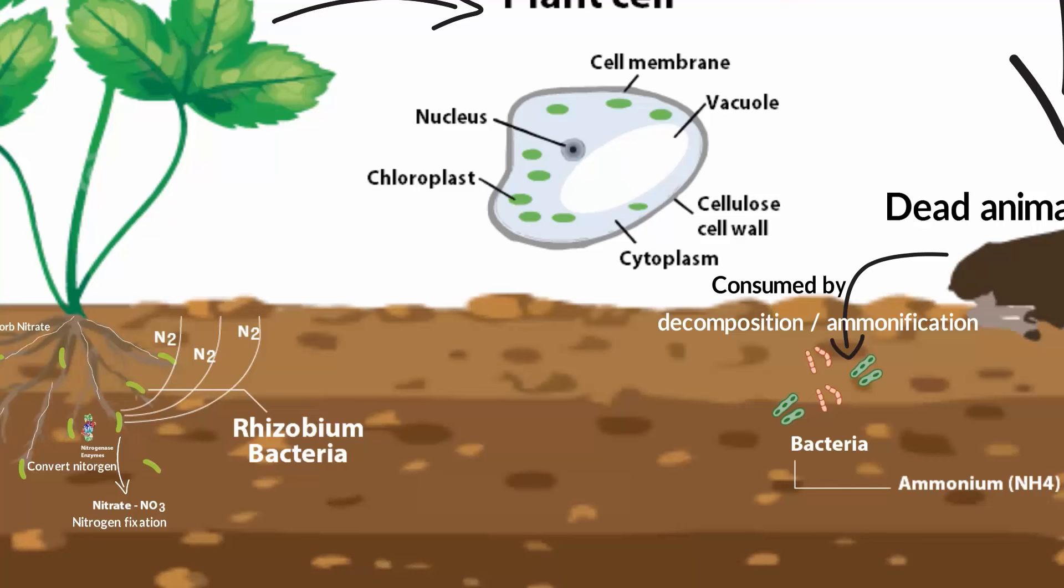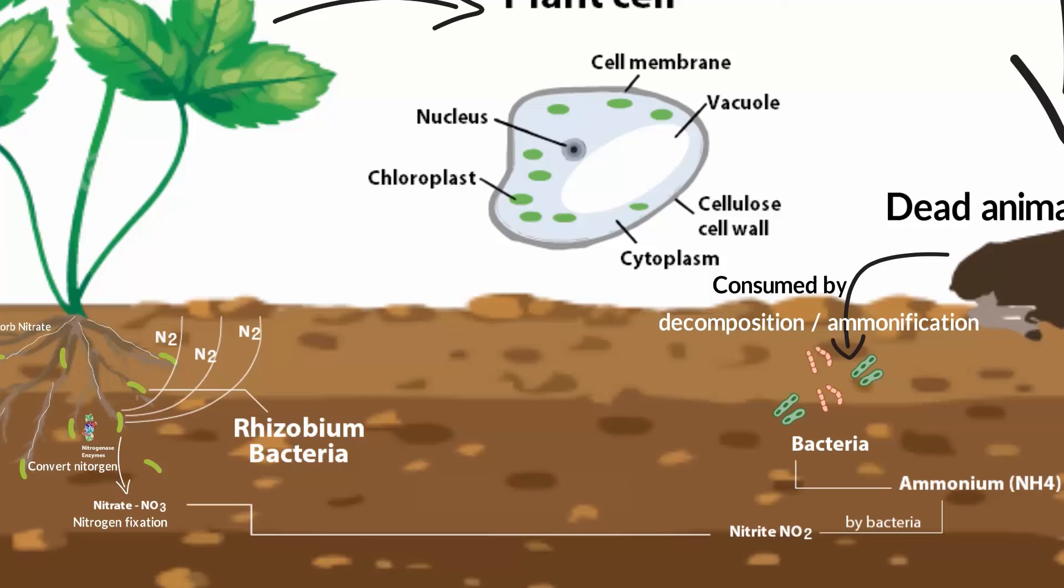Now, it is difficult for plants to use ammonium. So, this waste, ammonium, is again broken down by bacteria through a process called nitrification. Basically ammonia is first converted into nitrite and then to nitrate. And now, the plants can absorb nitrate.